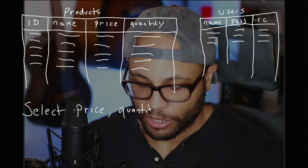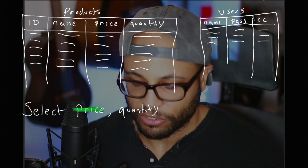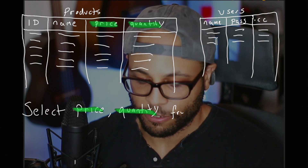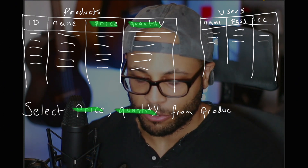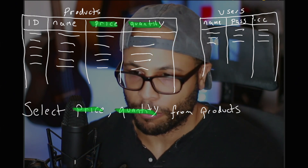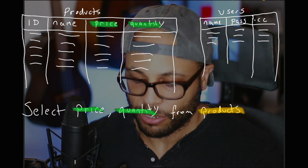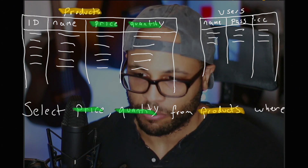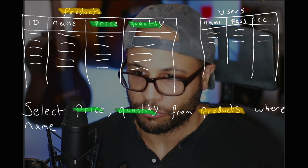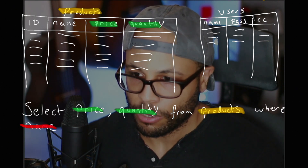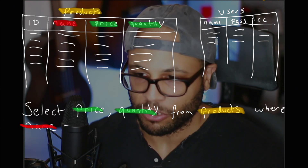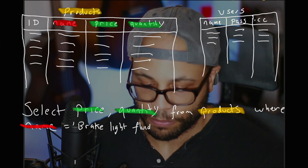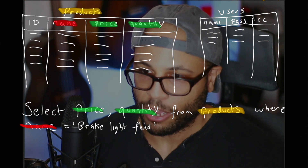To quickly and easily search this database, developers use a programming language called SQL. A simple query looks like this, which returns the price and the quantity from the products table for the item that we're searching for.